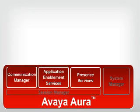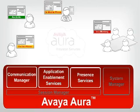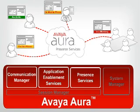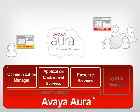Avaya Aura Presence Services is an aggregation service for collecting and disseminating rich presence from Avaya phones and soft clients, as well as third-party sources including IBM and Microsoft, so your employees always know the availability and the best way to connect with each other.